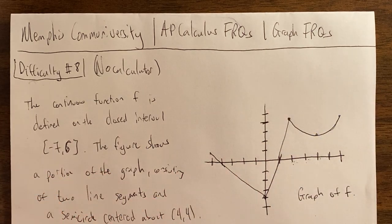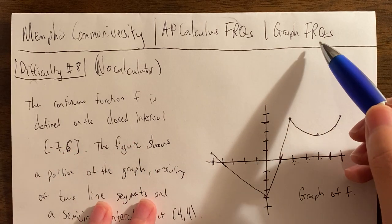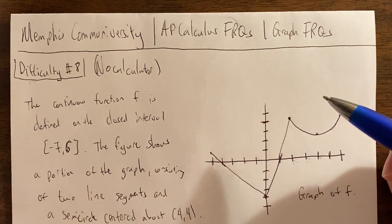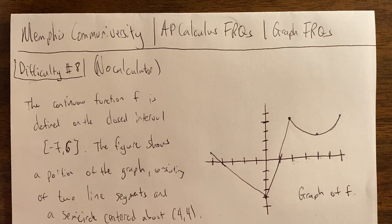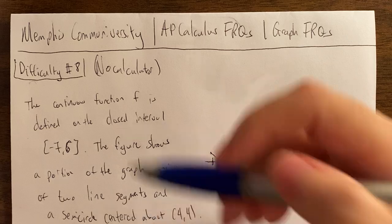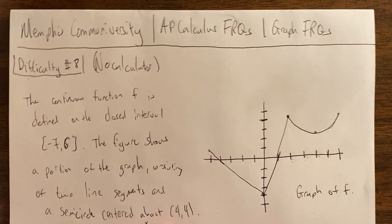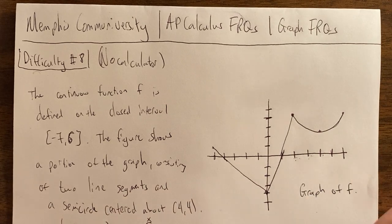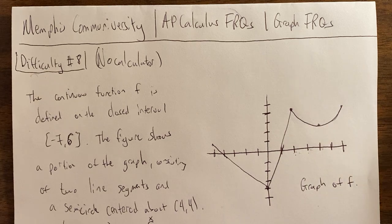If you haven't watched our channel, basically we go from difficulty 1 all the way up through difficulty 10, covering every single general free response question topic found on both the AB and the BC exam. We have Graph Free Response Questions, Particle Motion Questions, Taylor Series — any topic you can think of. So when we get up to difficulty 8, we start hitting the hard stuff. We'll still be using our general rules for increasing and decreasing and things like that.